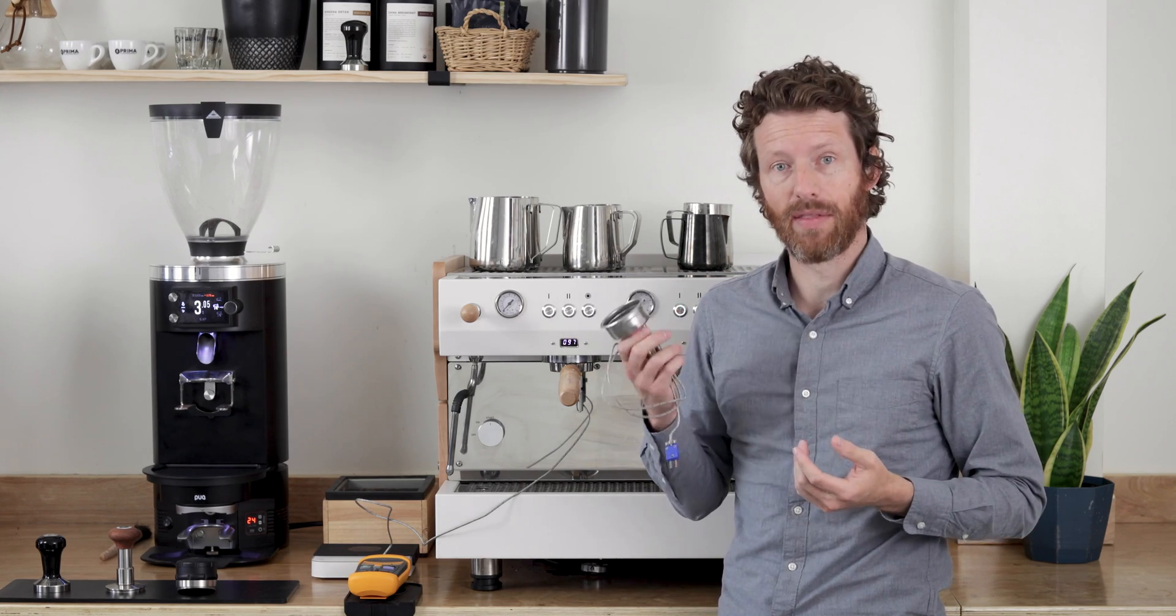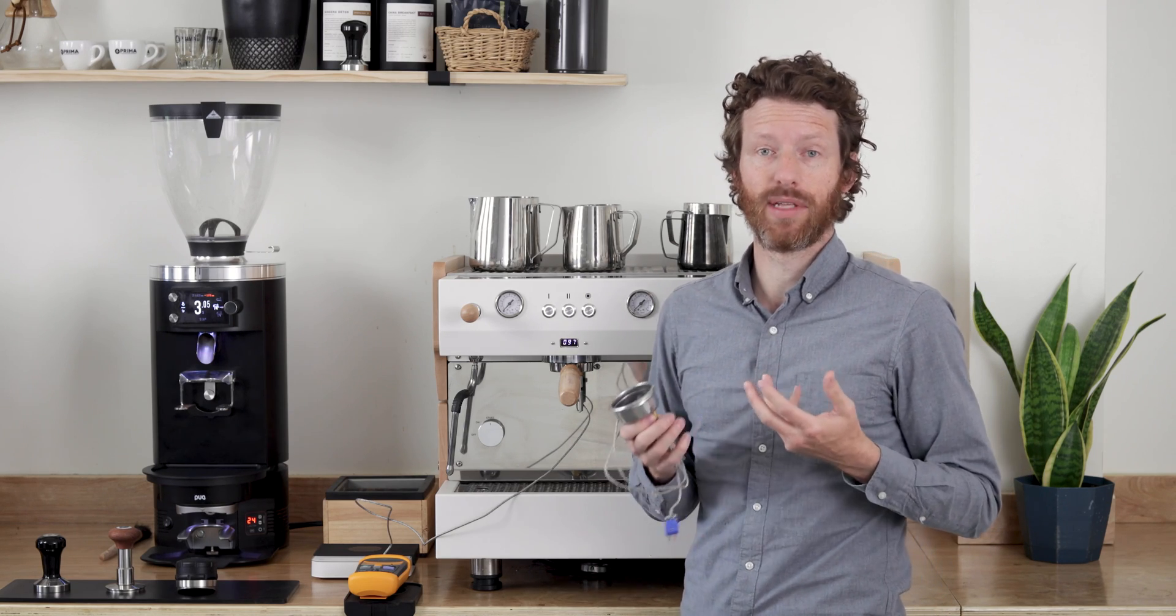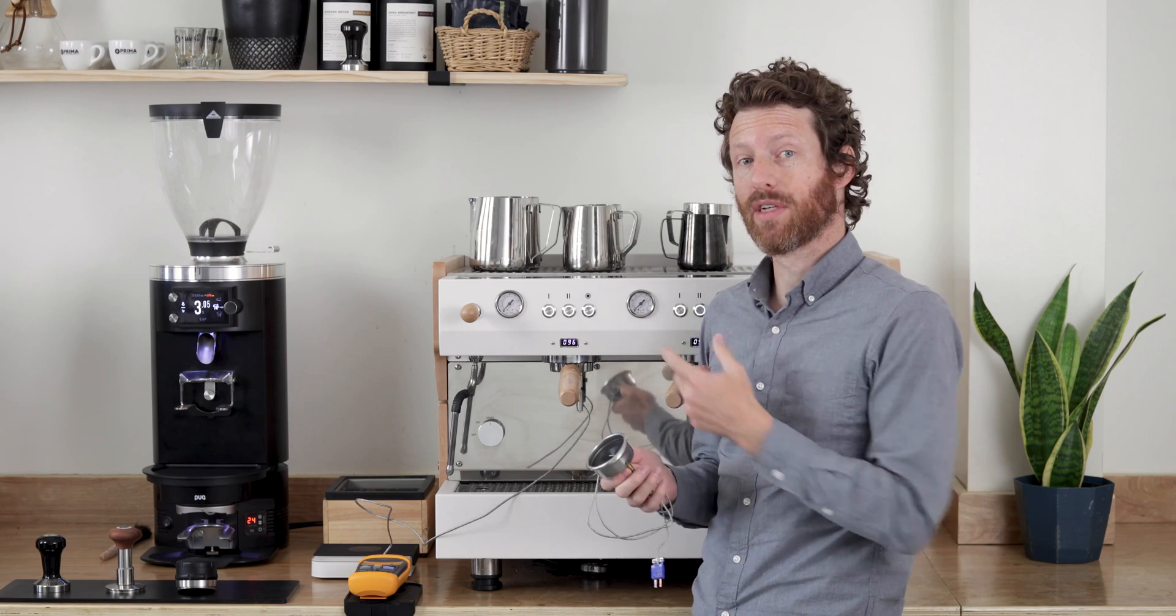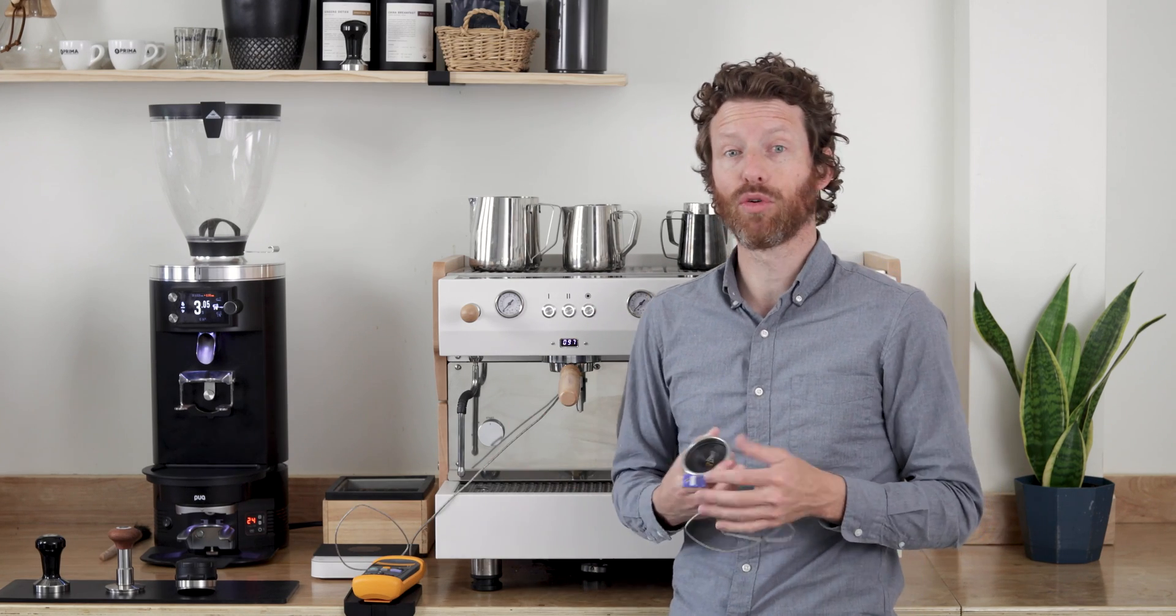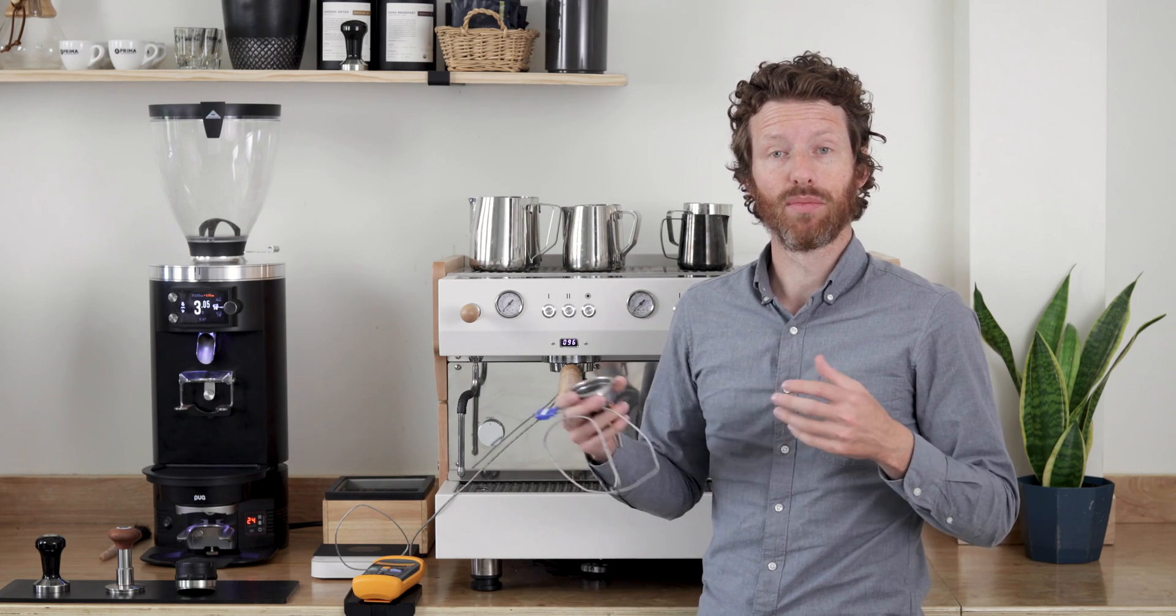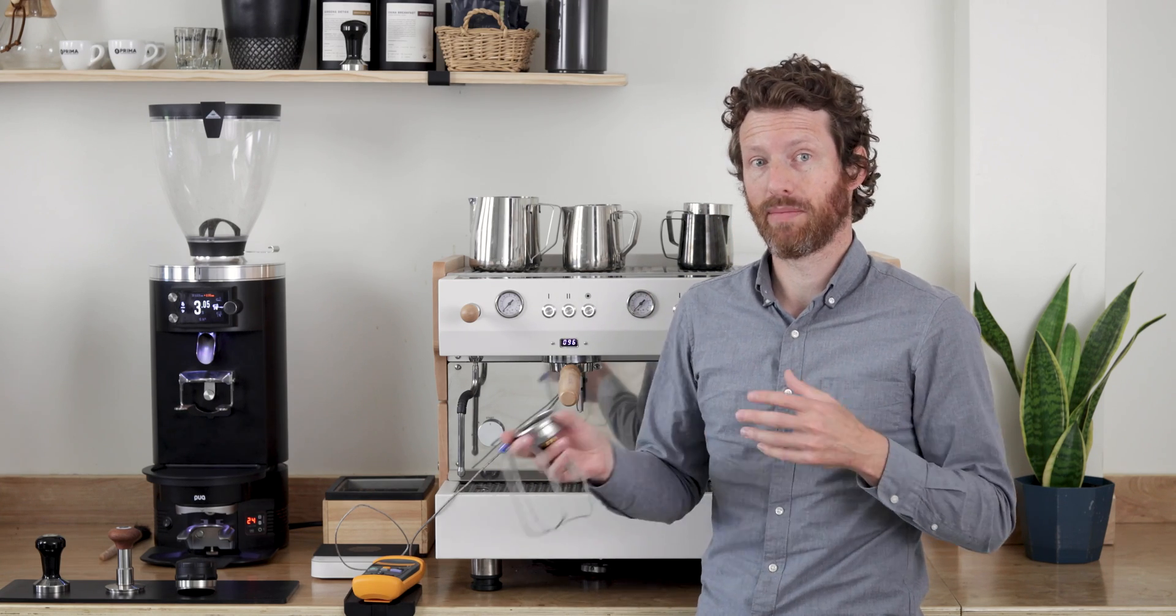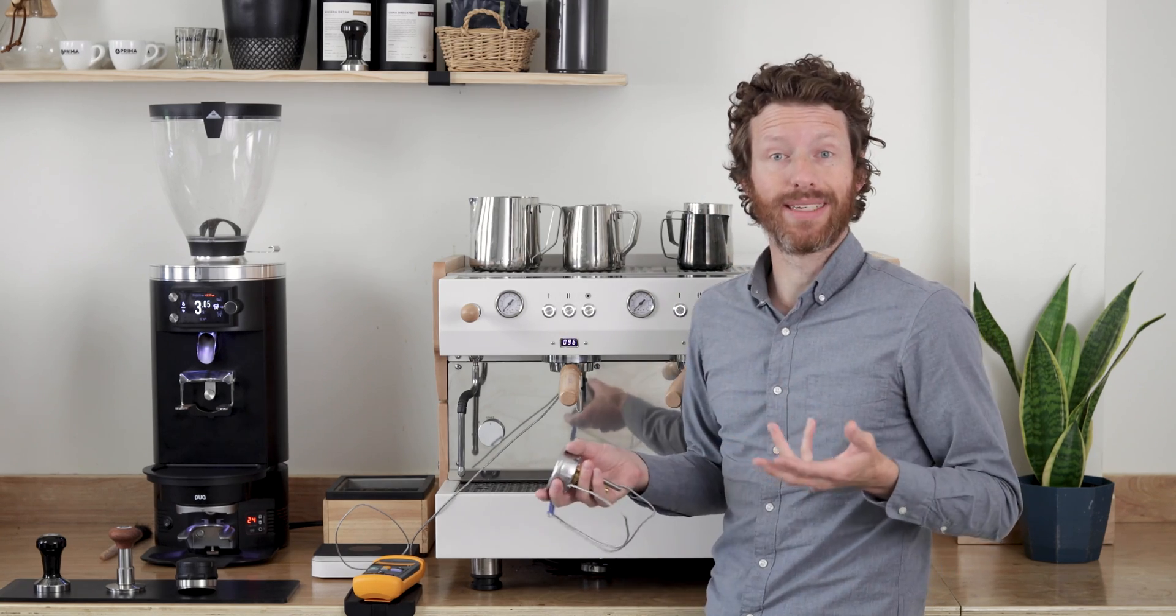So what he did was create this little device here to measure accurately the temperature of the water coming out of the dispersion screen. We think this is predominantly going to be used for commercial purposes. If you have a cafe, or multiple cafes perhaps, and you want to make sure the temperatures across all of them are the same so that your coffee is tasting consistent.